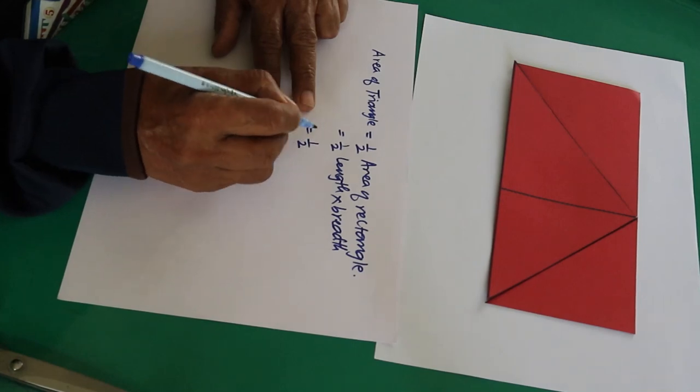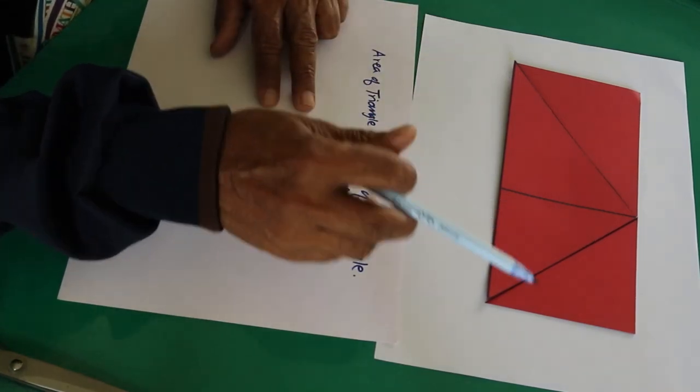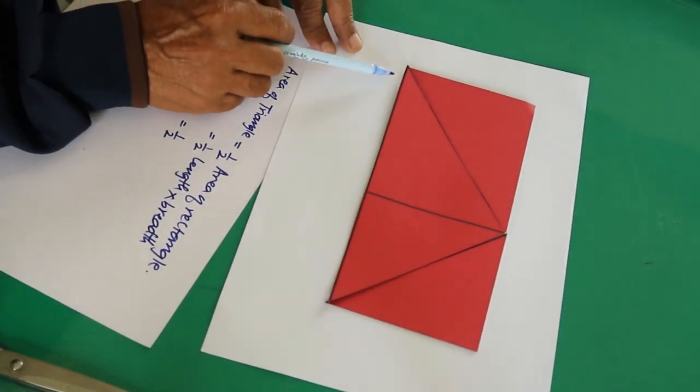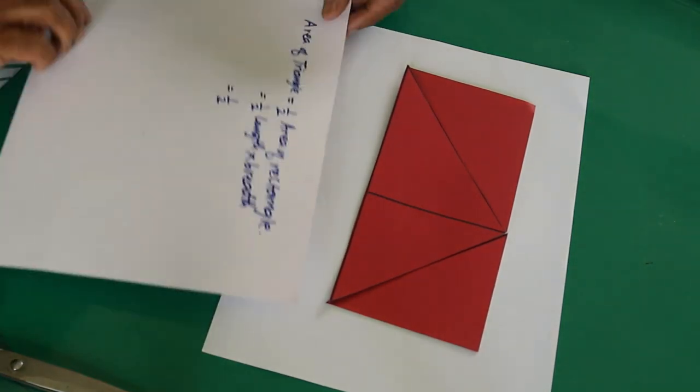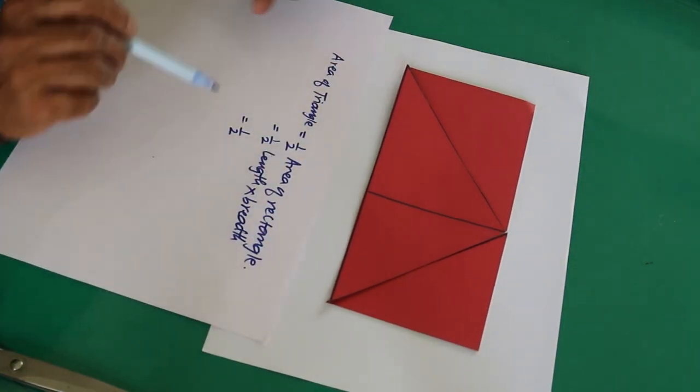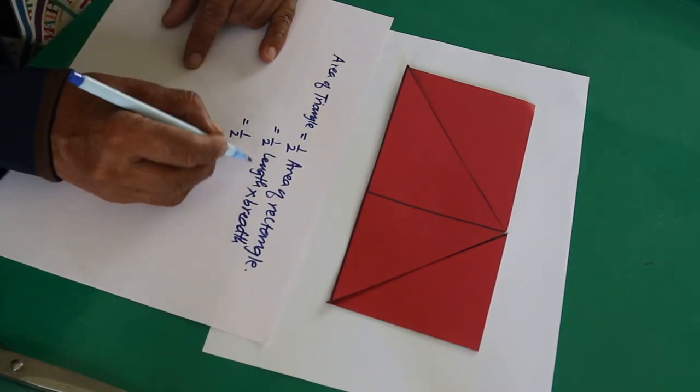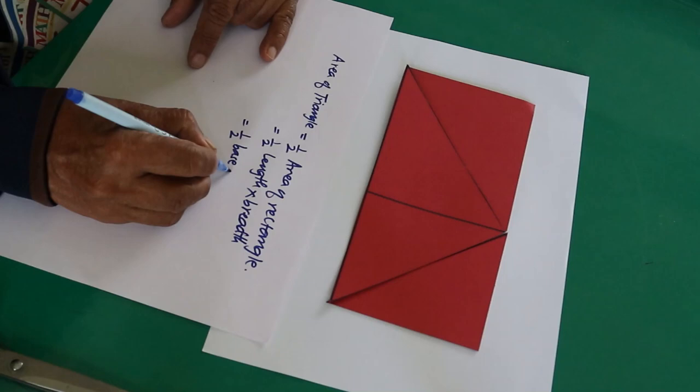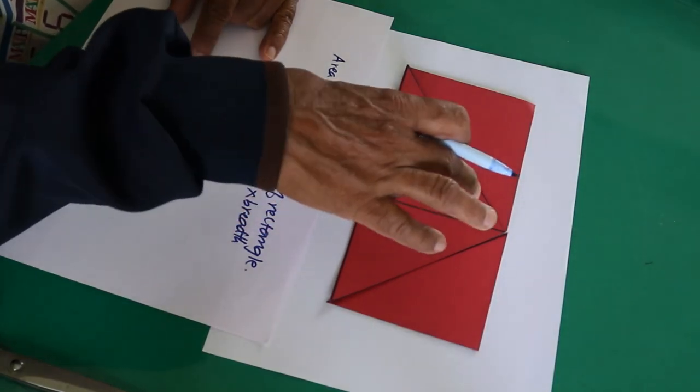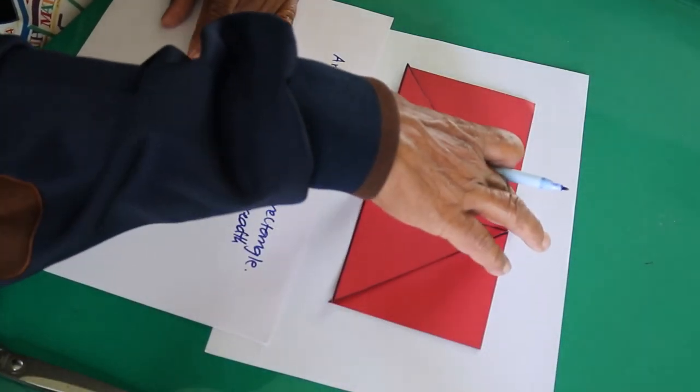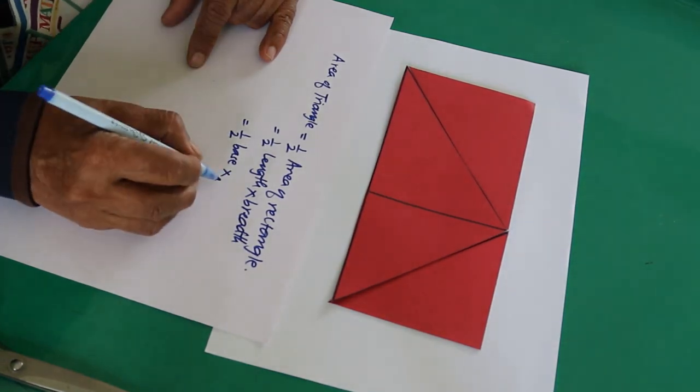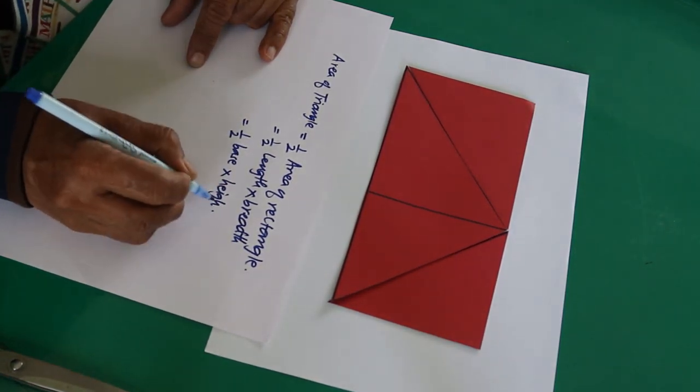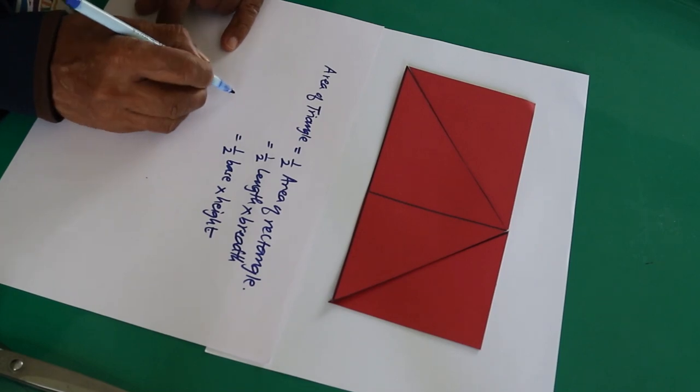And half, I have said earlier this length, the length of this rectangle is representing the base of the triangle. That's why in place of length I can write here base, base of that triangle, into this breadth is equal to the height of the triangle. Therefore, the breadth is replaced by height. Now you have the generalization.